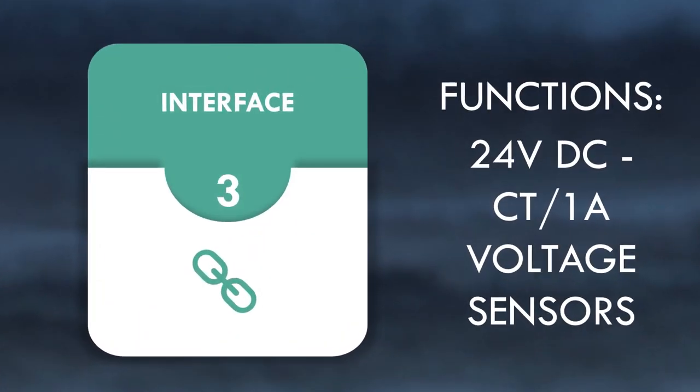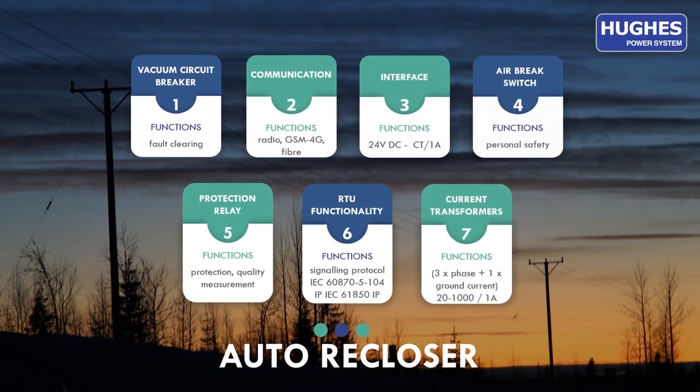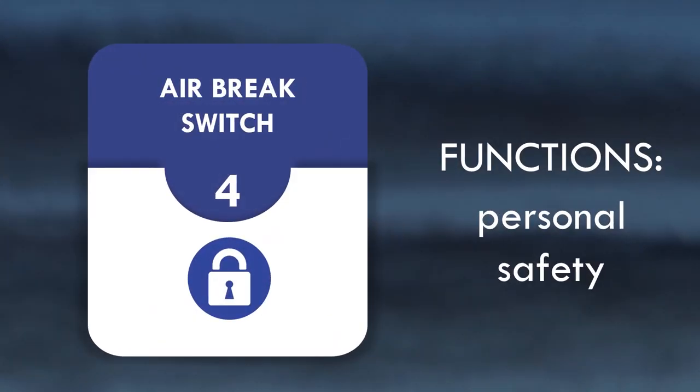Interface is basically a connecting cable between protection relay and a switch module, 24V DC operation, 1A current transformers and voltage sensors, and integrated air brake switch.